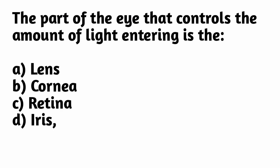The part of the eye that controls the amount of light entering is — the correct option is option D: iris.